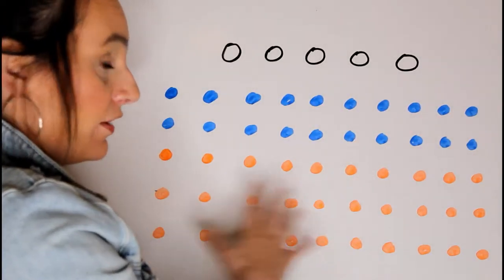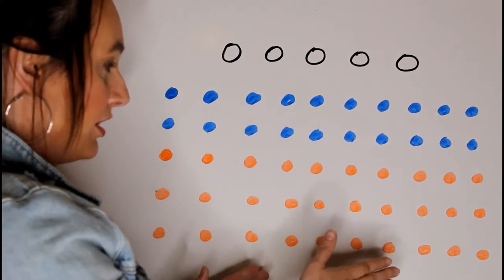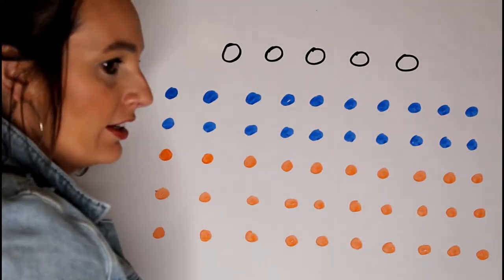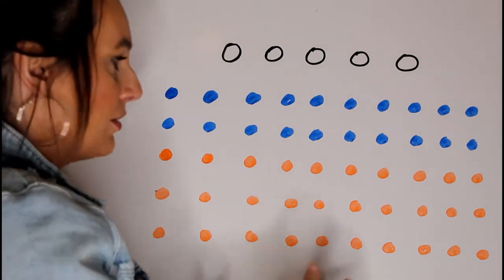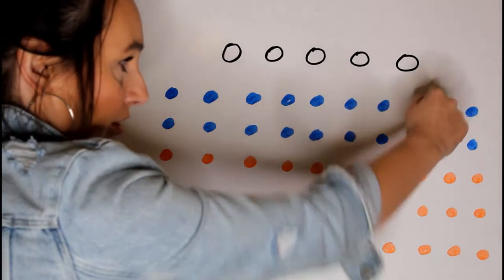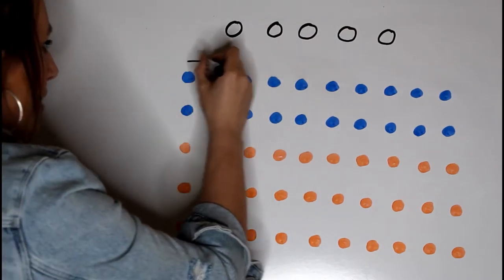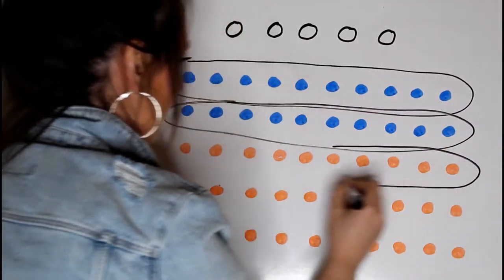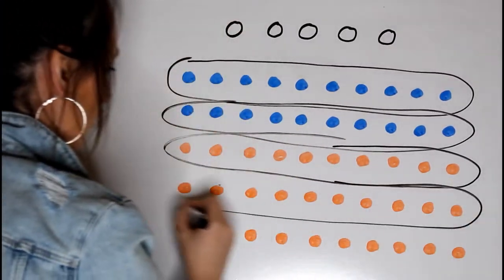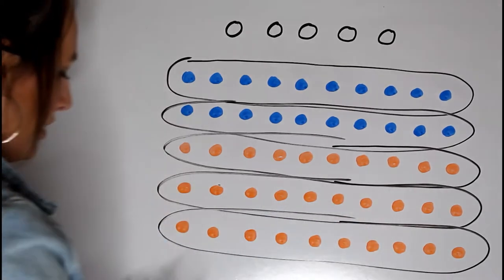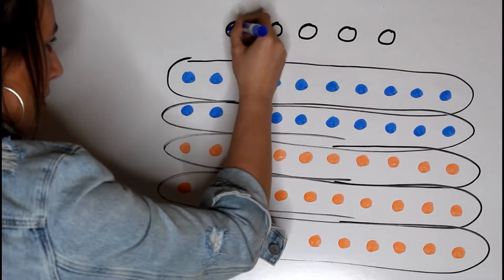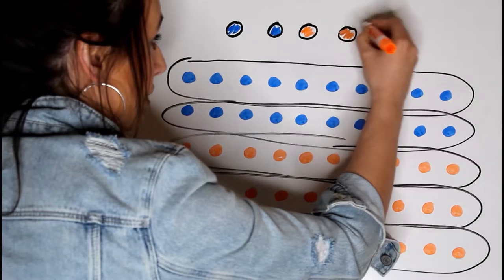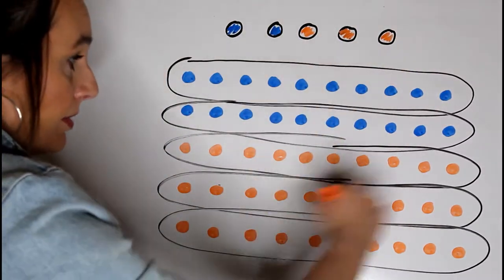Let's pretend this state has a population of 50 people, and based on that population they get to elect five reps. There are 20 people in the blue party and 30 people in the red party. I'm going to draw the lines in three different ways to illustrate how different lines impact the representation. Scenario one: the lines can be drawn like this, giving the state two blue reps and three red reps. This is the ideal situation in a representative democracy because the reps reflect the population exactly.